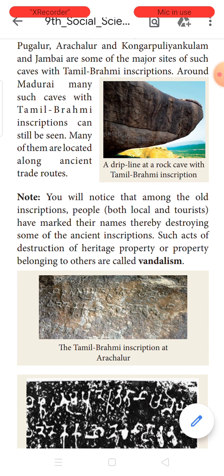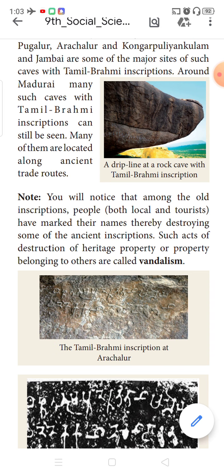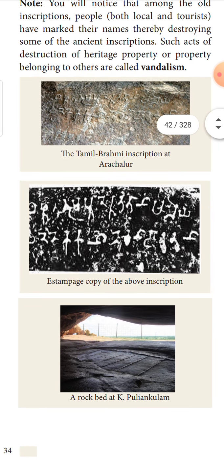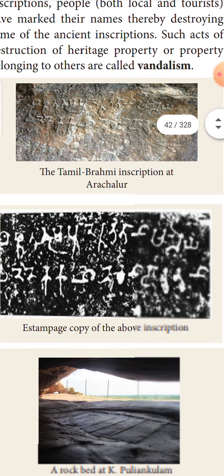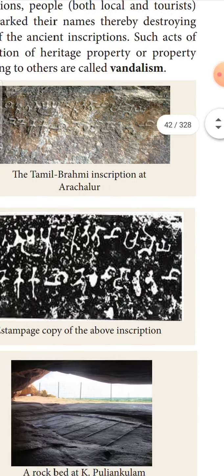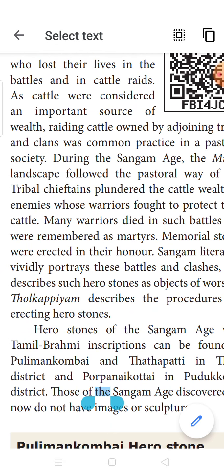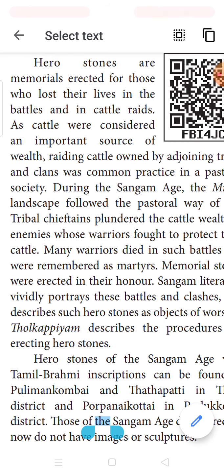Next is Padinen Kirkanakku — 18 minor works comprising elaborate texts on ethics and morals: how a man has to lead life, what is moral and immoral, what is ethical and unethical. The most eminent work is the contribution of Tiruvalluvar — the Tirukural, comprising 1330 couplets. A couplet is a poem of two lines. Tirukural considers questions of morality, statecraft, and love — Arathupal, Porutpal, and Inbathupal.